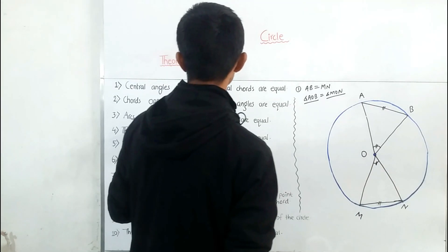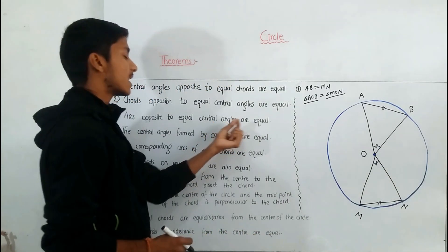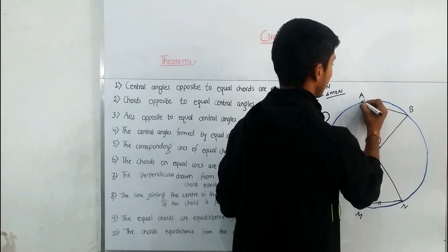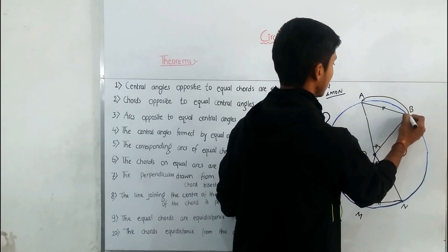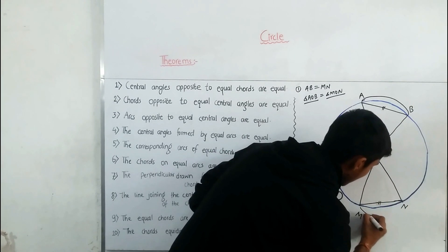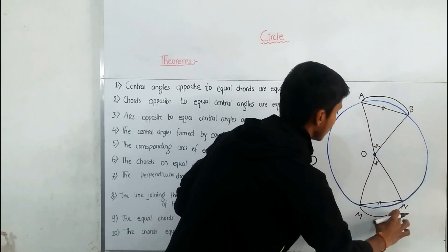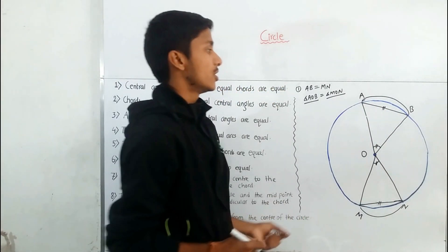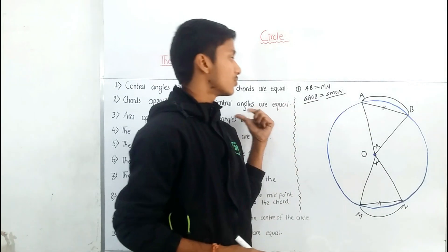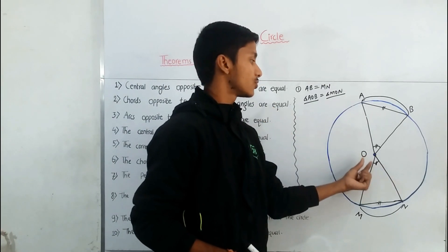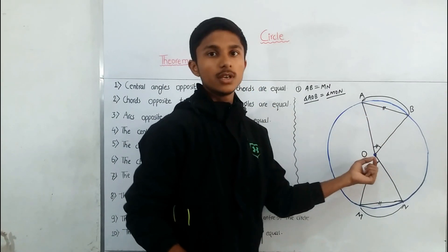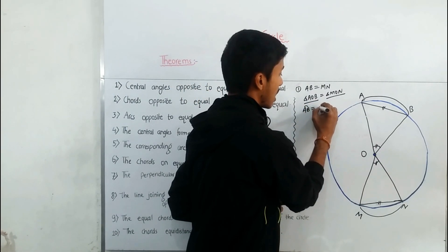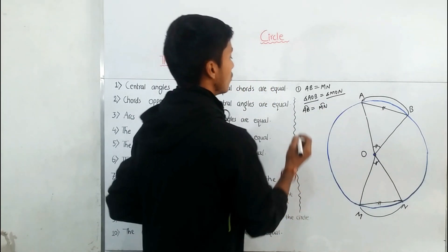Theorem 3: arcs opposite to equal central angles are equal. When central angles AOB and MON are equal to each other, the arcs opposite to these central angles will also be equal — so arc AB is equal to arc MN.